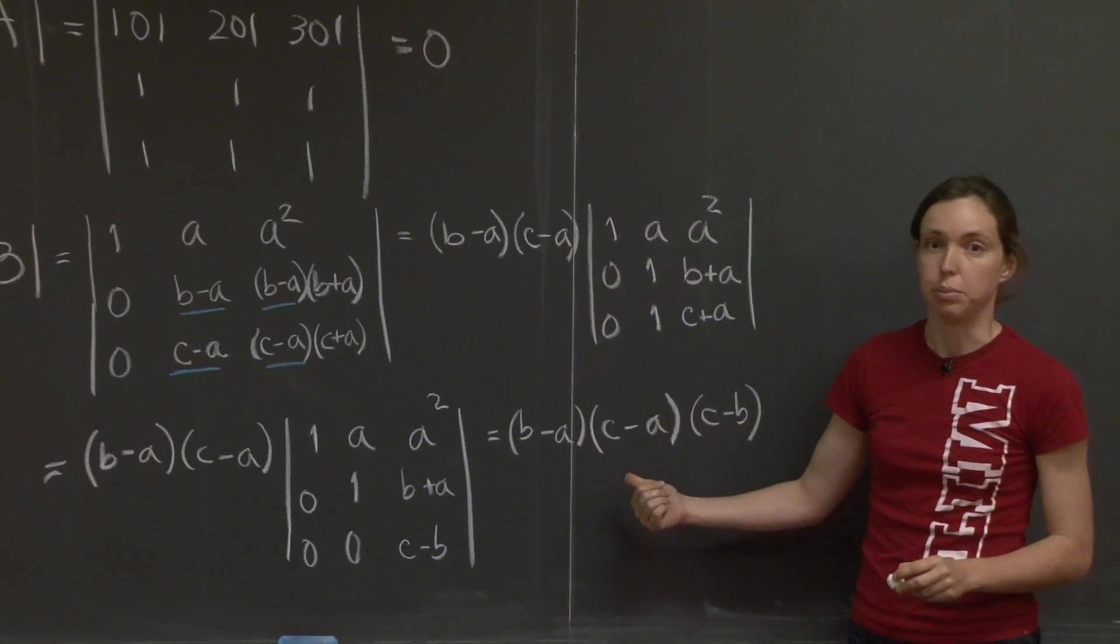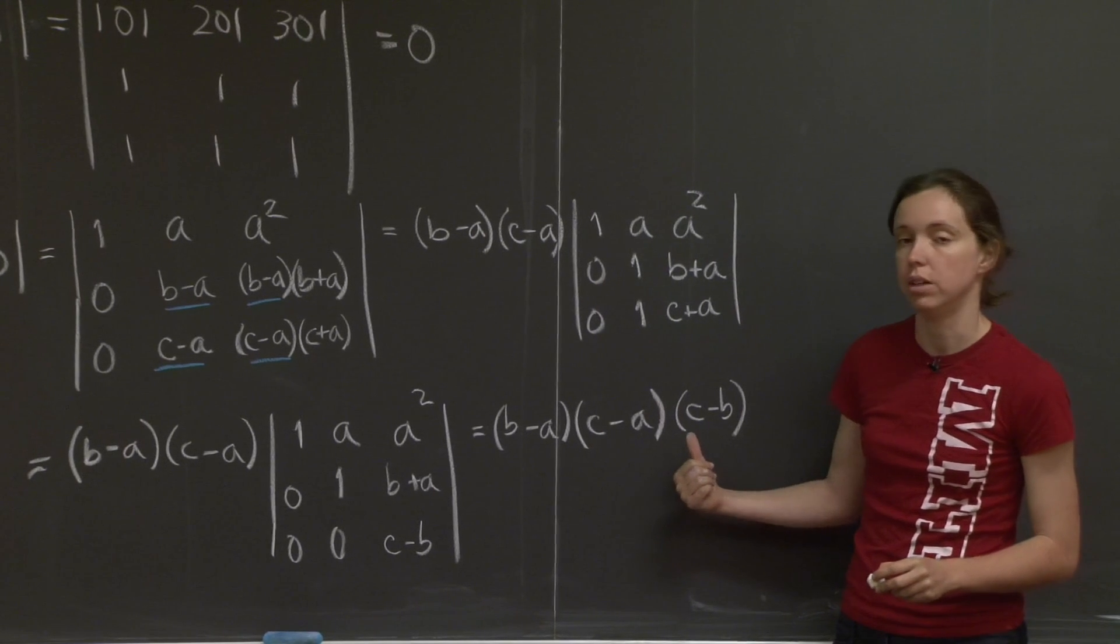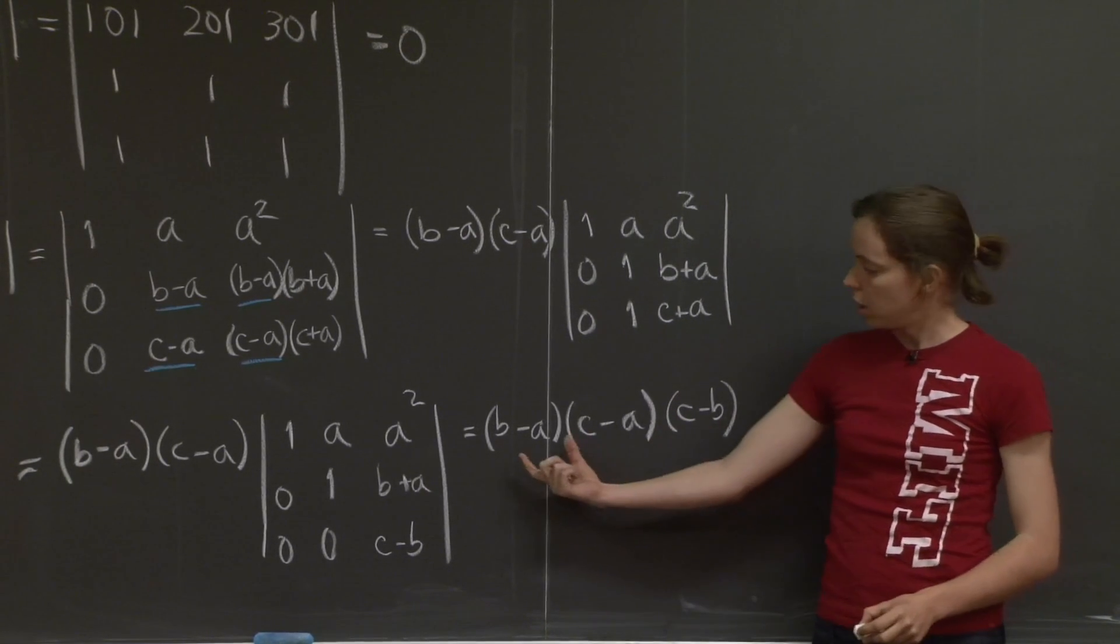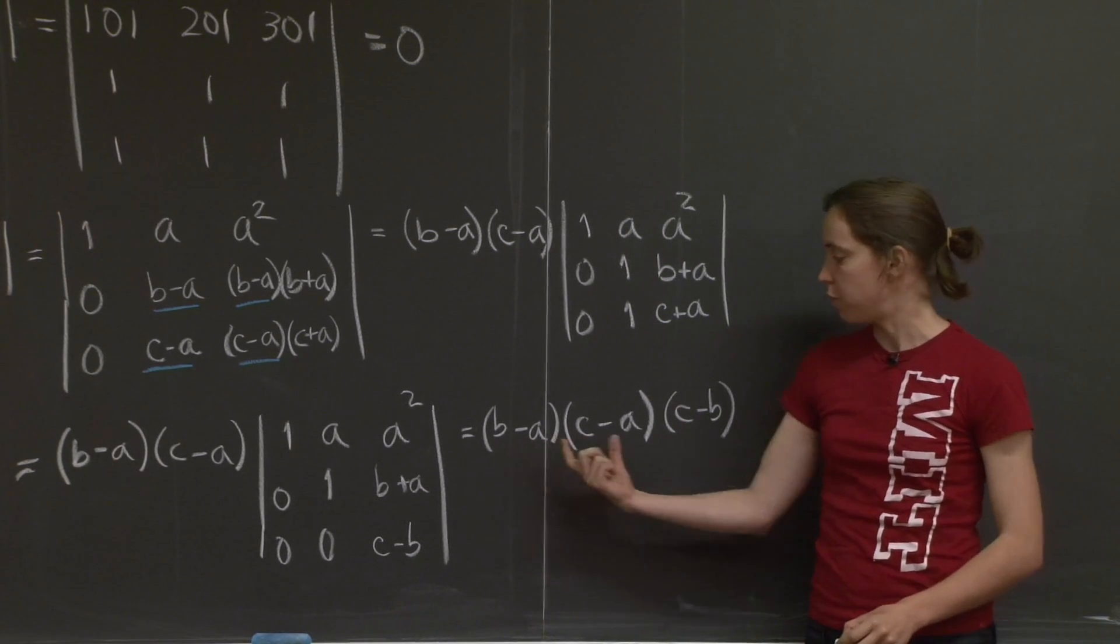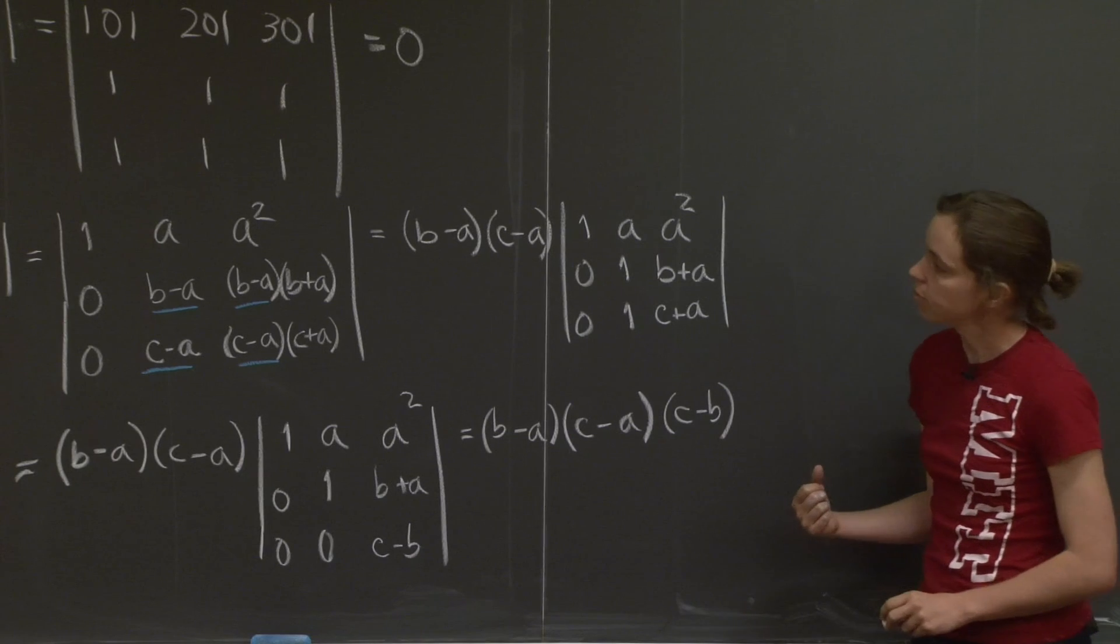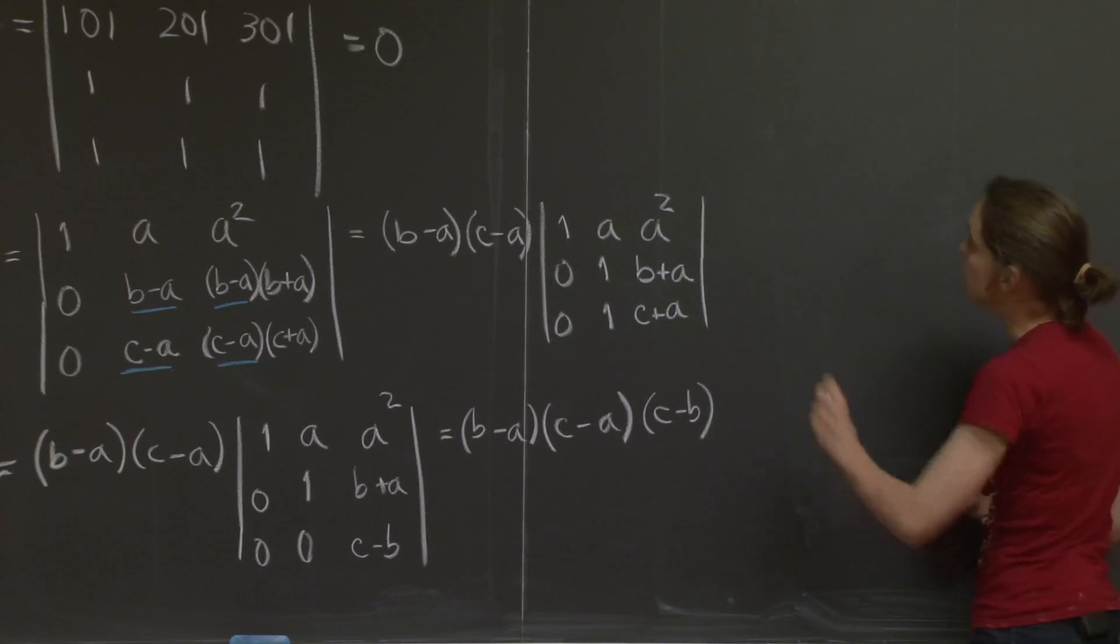This is called the Vandermonde determinant, and it's always like this. Even if your matrix is bigger than 3 by 3, if it's 4 by 4 or 5 by 5 and so on, you just have more differences of all the letters that show up in your matrix.